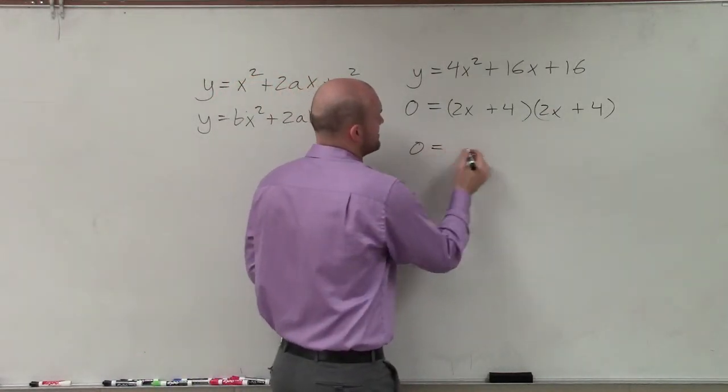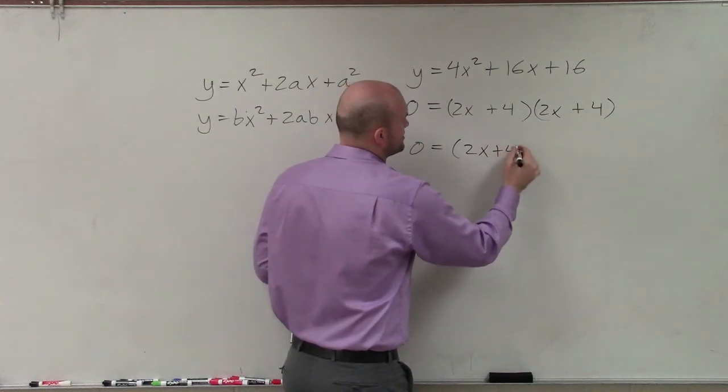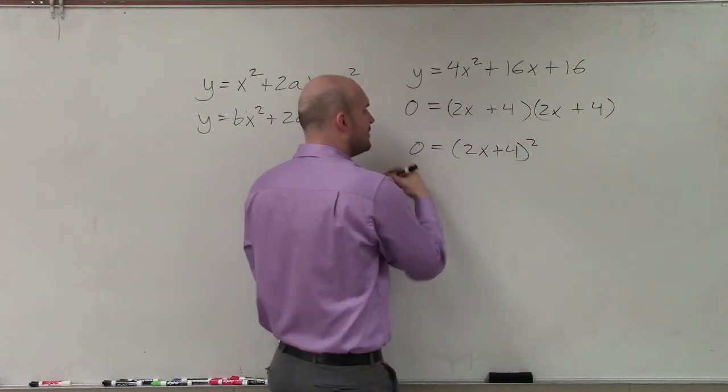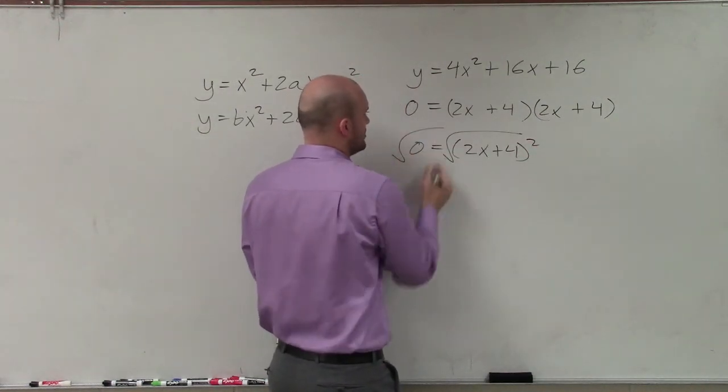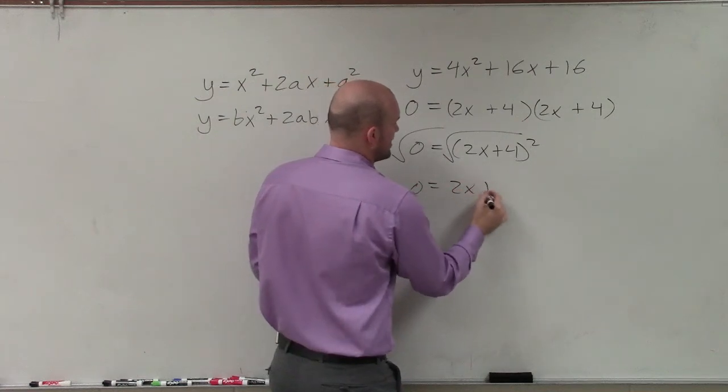Now, then I can rewrite this as a binomial squared. So it's 2x plus 4 squared. Now, I can go ahead and solve. So take the square root of both sides. 0 equals 2x plus 4.